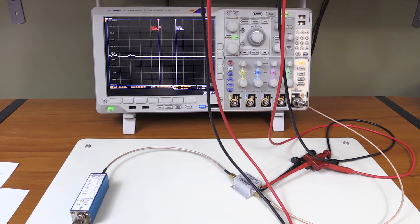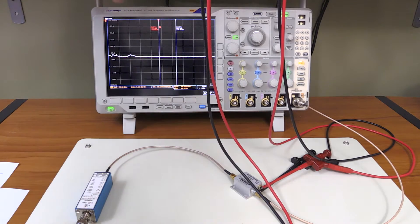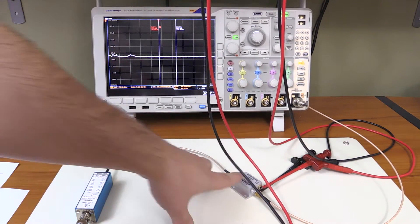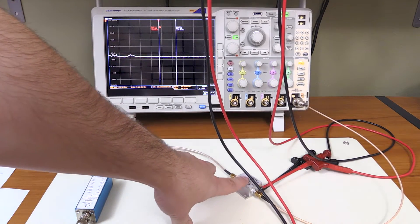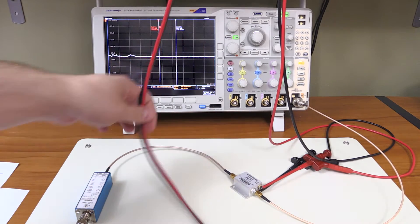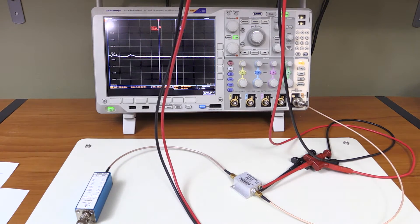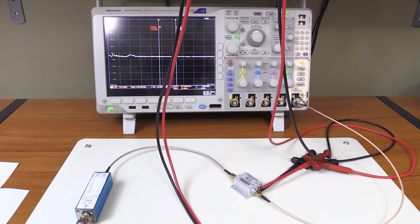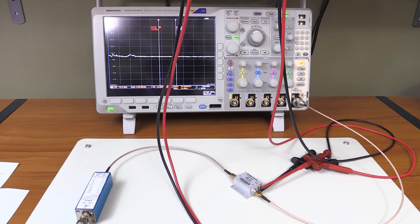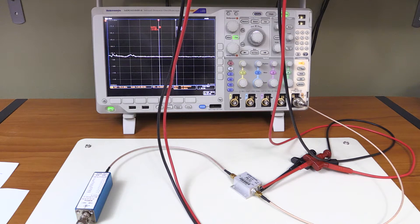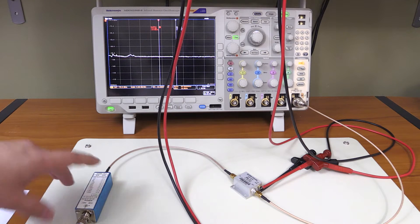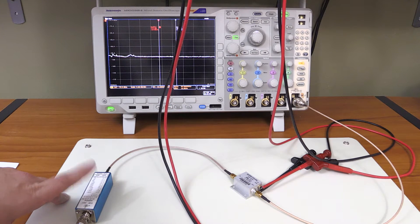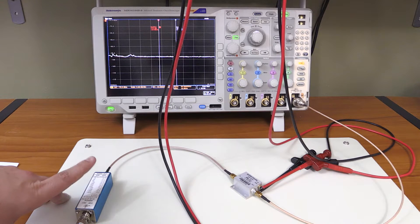The Y-factor method requires a calibrated noise source and a spectrum analyzer. We're going to use our ZKL-2 Plus amplifier as the device under test. Basically, what we need to do is measure the output of the amplifier with the noise source turned on and then again with the noise source turned off, determine the difference.